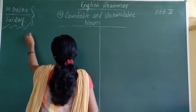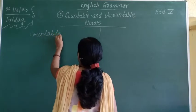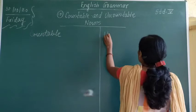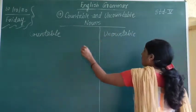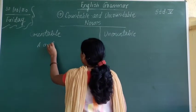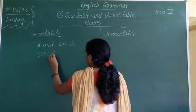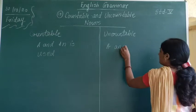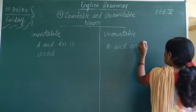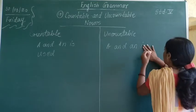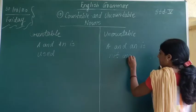I am writing here: countable nouns and uncountable nouns. For countable nouns, A and AN is used. For uncountable nouns, A and AN is not used.